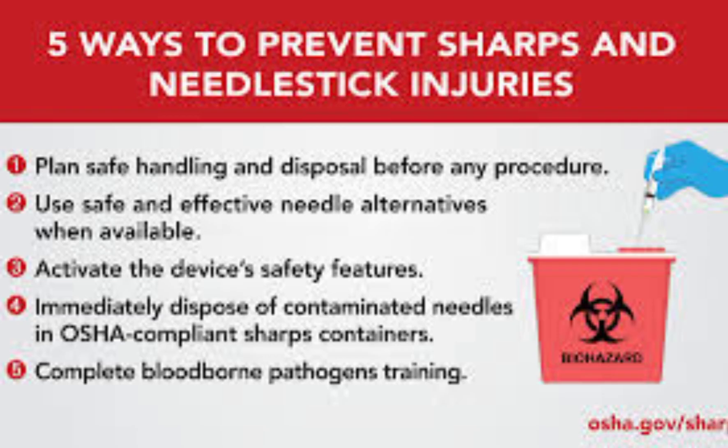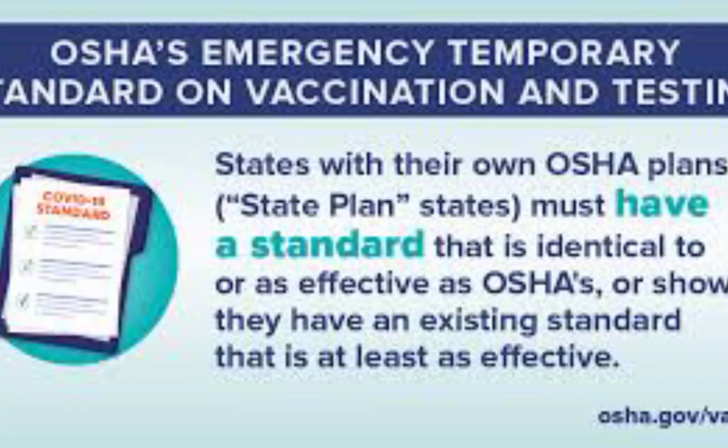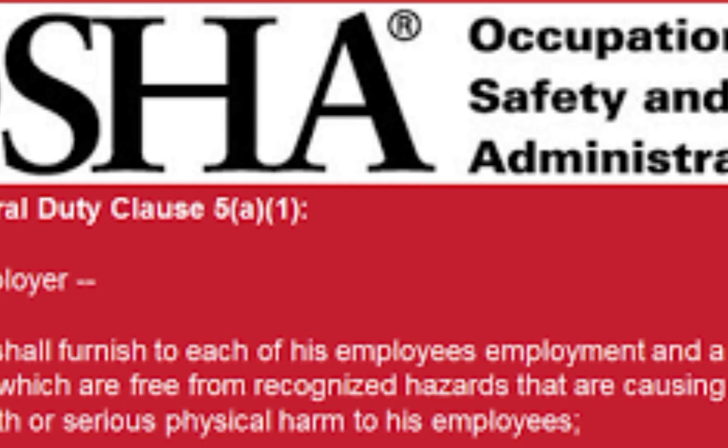The General Industry standard was introduced in 1910. The Construction Safety Standard was introduced in 1926. There are some subparts under each of these OSHA standards. For example, under Part 1910, block A contains general information. The major subparts in the 1910 standards include the following.